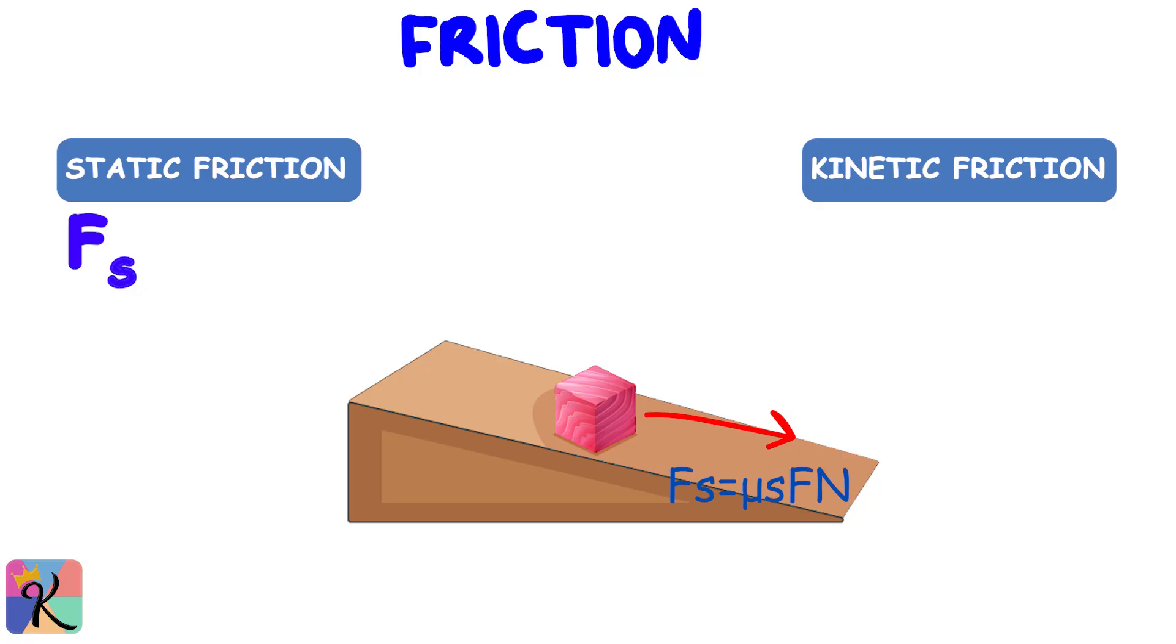Once the block starts moving, kinetic friction takes over, represented as Fk = μk·Fn. Remember, kinetic friction is usually less than static friction, which is why things tend to accelerate once they start moving.